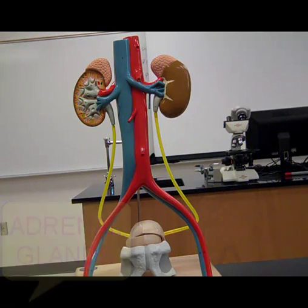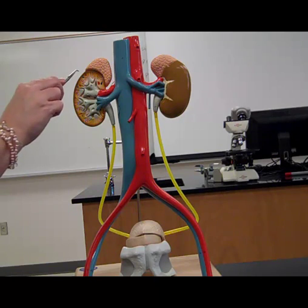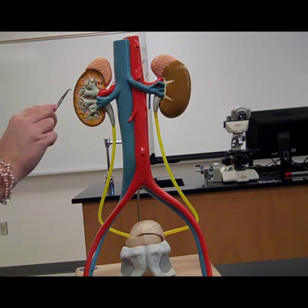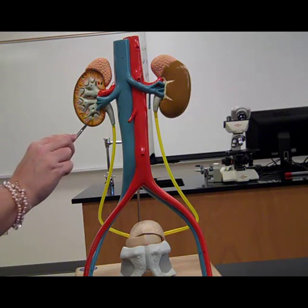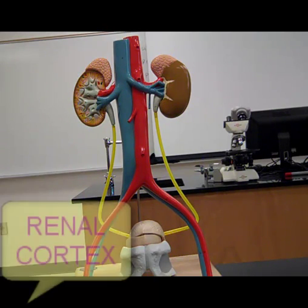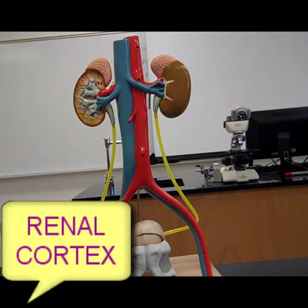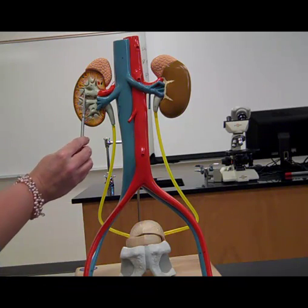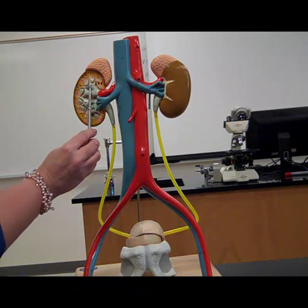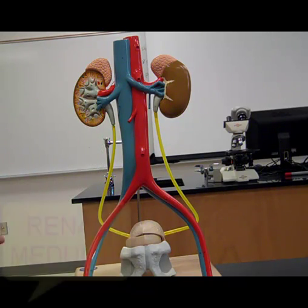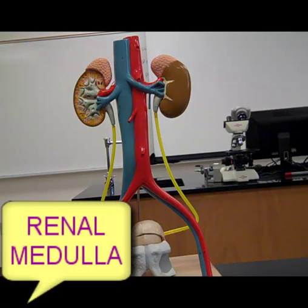We have a general term for the outer portion, or the outer tissue of the kidney, as the renal cortex. And then we have a general term for all of the inner structure, the inner tissue — that's the renal medulla.